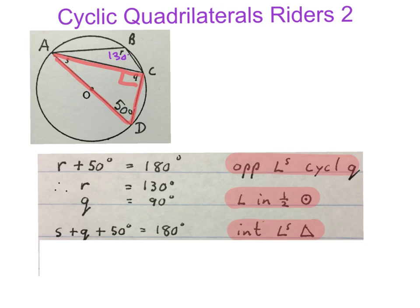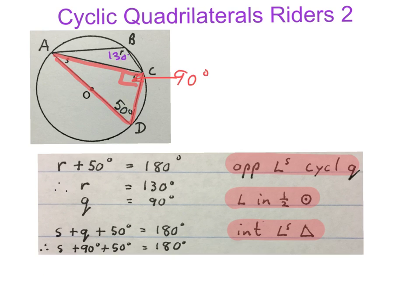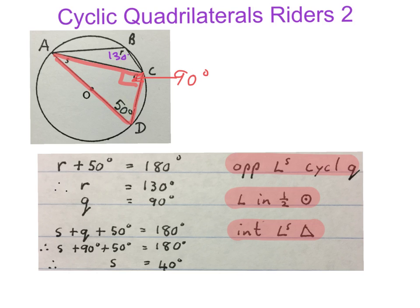Then we add up the angles in this triangle and say S plus Q plus 50 degrees equals 180 — interior angles of a triangle. We know Q is 90 degrees and the given angle is 50 degrees, so S equals 40 degrees. We minus the 90 and the 50 from the 180. I always like to write my numbers in on my sketch.